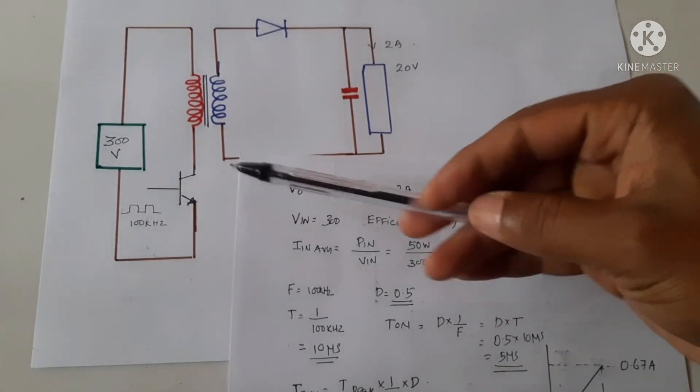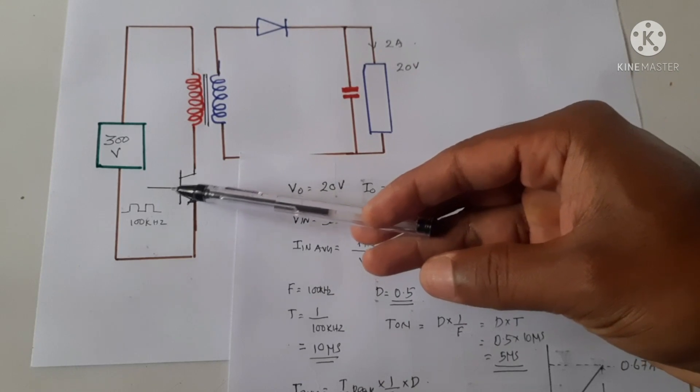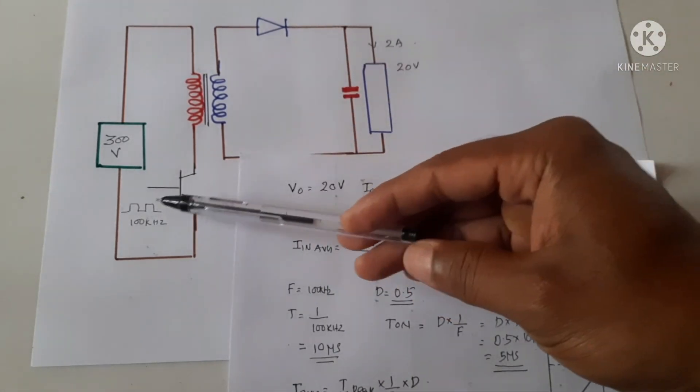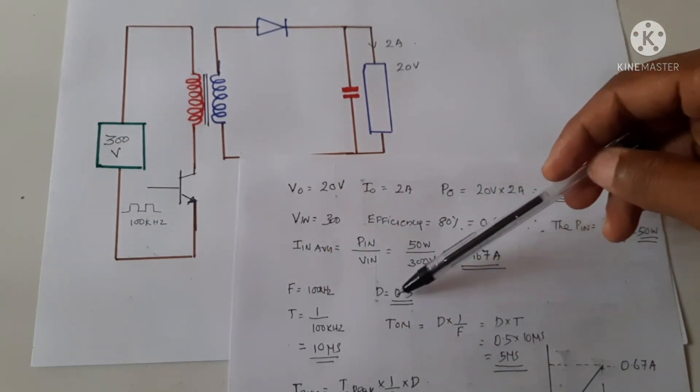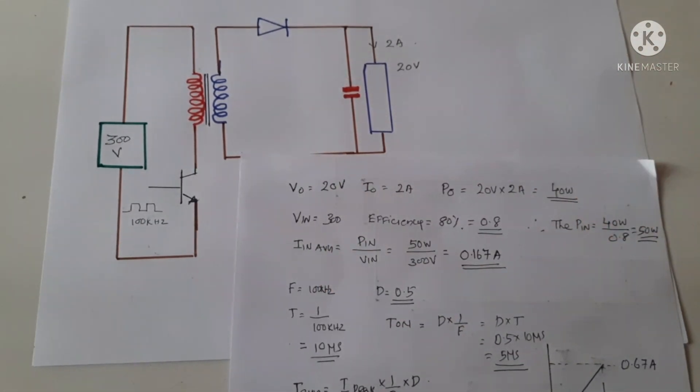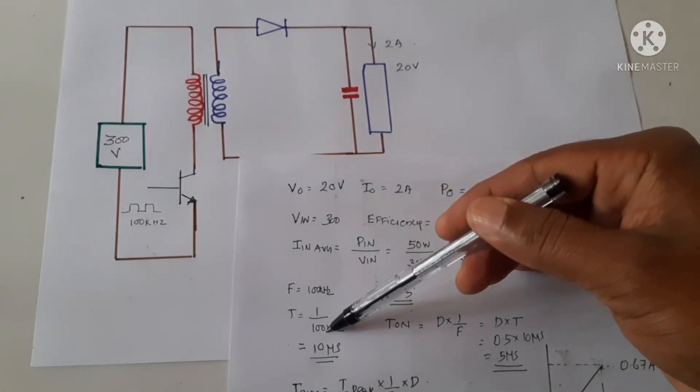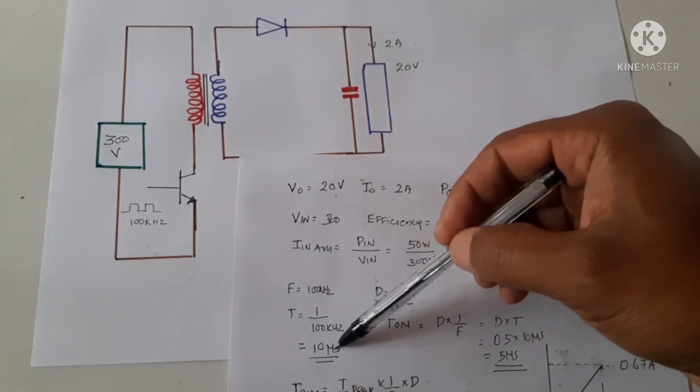Now if we assume that the frequency at which the transistor is switching on and off is 100 kilohertz, and the on-time is 0.5, half the time only it is on. Then time period is given by 1 by frequency, that is 1 by 100 kilohertz, equals 10 microseconds.